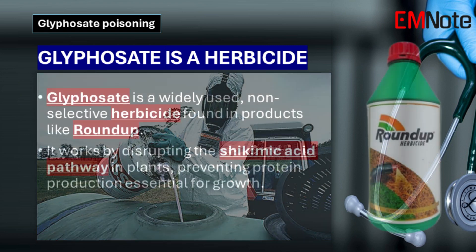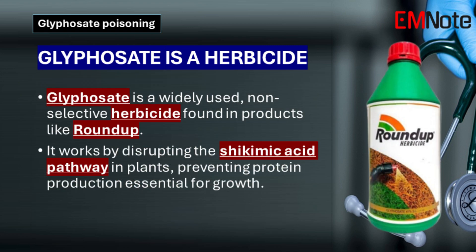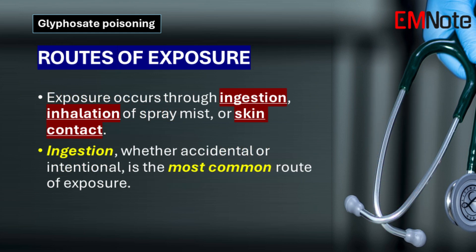Glyphosate is a widely used non-selective herbicide commonly found in products like Roundup. It is applied to plant leaves, effectively controlling broadleaf weeds and grasses. Glyphosate prevents plants from creating proteins essential for growth by disrupting the shikimate acid pathway.